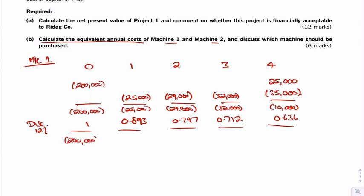Then you just multiply those through. So 200,000, that would be 22,325, that would be 23,113, that would be 22,784, and that would be 6,360. So you then add all of that across and you should get 274,582. So that's the total costs.